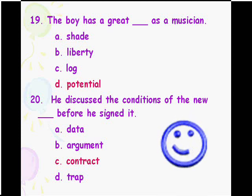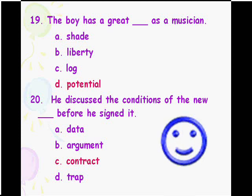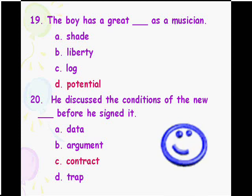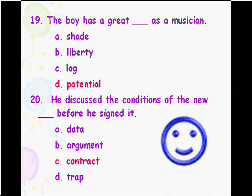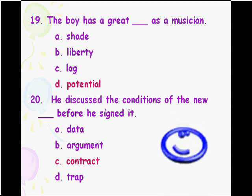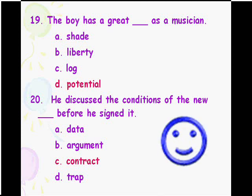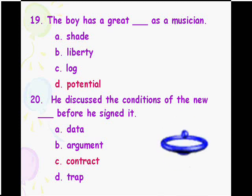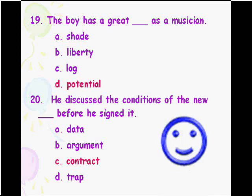Question nineteen: 'The boy has ___ potential as a musician.' Options: shade, liberty, log, potential. The answer is potential — he is talented and going to be a musician. Question twenty: 'He discussed the conditions of the new ___ before he signed it.' Options: data, argument, contract, trap. The answer is contract — you always sign a contract, which has conditions and is a documented paper.